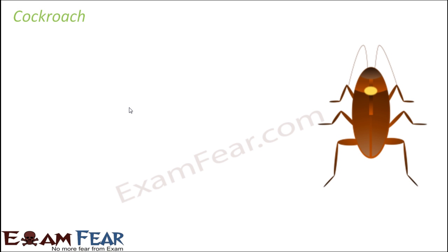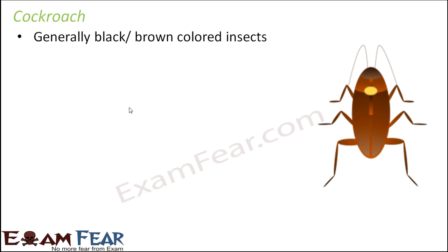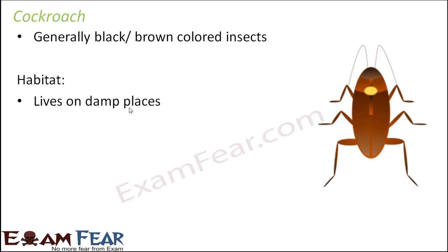We have picked up the cockroach in this case because you must be familiar with it. They are generally black or brown in color and very commonly seen in your houses and neighborhood. It lives in damp places wherever there is water, and it generally tends to grow and live there.